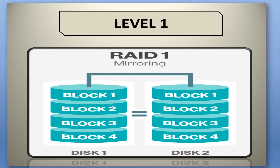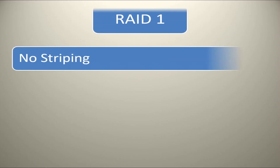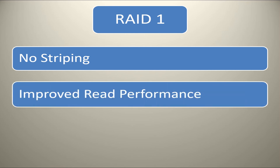RAID 1 is also known as Disk Mirroring. This configuration consists of at least two drives that duplicate the storage of data. There is no striping, and RAID performance is improved since either disk can be read at the same time. RAID write performance is the same as it is for single disk storage.